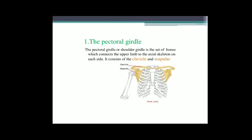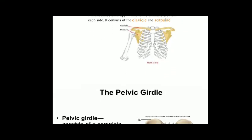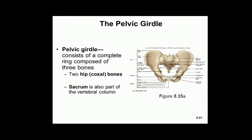The pectoral girdle or shoulder girdle connects the upper limb to the axial skeleton on each side, consisting of clavicle and scapula. The pelvic girdle consists of a complete ring composed of three bones — the two hip bones (coxal bones) — as well as the sacrum, which is also part of the vertebral column.